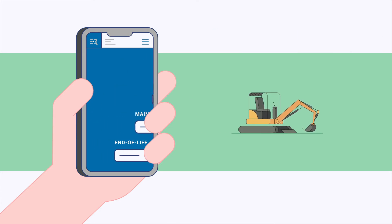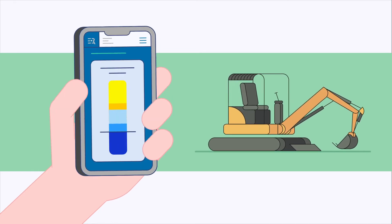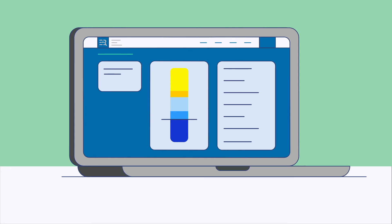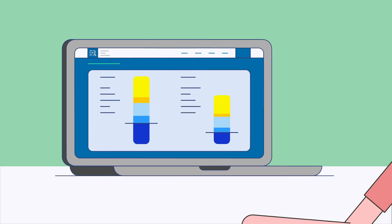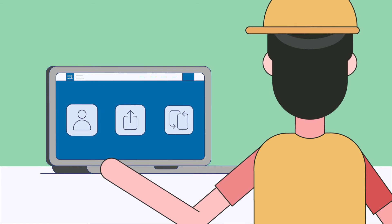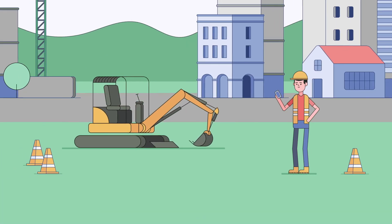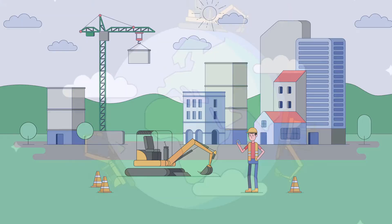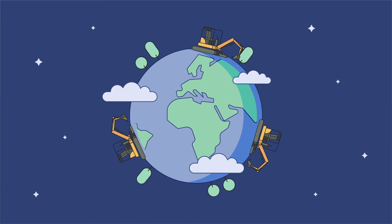And get a detailed breakdown of the carbon footprint according to each parameter. You can then share results or compare different scenarios to explore how you could lower your greenhouse gas emissions. You can also embed the calculator on your own website. Use the ERA Equipment CO2 Calculator and start to build a more sustainable future.